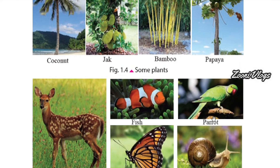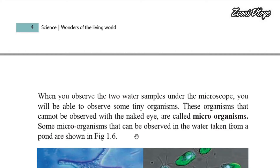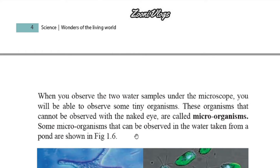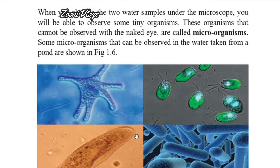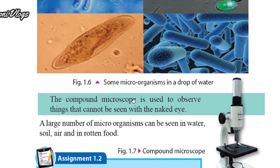Now you can see there are many more plants as well as animals. When you observe two water samples under the microscope, you will be able to observe some tiny organisms. These organisms that cannot be observed with the naked eye are called microorganisms. Some microorganisms can be observed in water taken from a pond. We have to use a microscope to see those very tiny organisms. Usually the compound microscope is used to observe things that cannot be seen with the naked eye. A larger number of microorganisms can be seen in water, soil, air, and in rotten food.